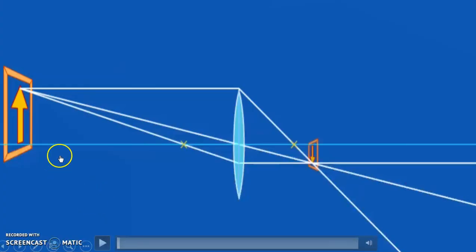So right now, I have basically just a simple simulation here. You've got my object, you've got my image. What I'm going to do, I'm going to move my object closer to my lens and observe what happens. Right now, as my object is far away, you can see my image is actually smaller than the object.